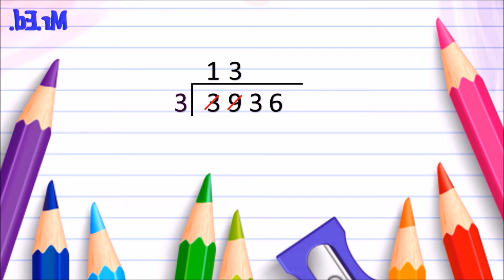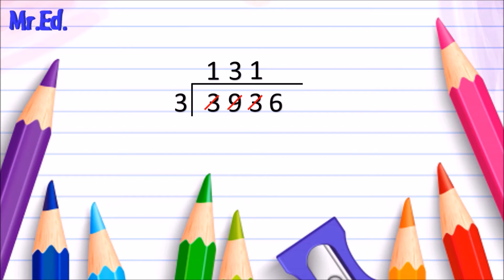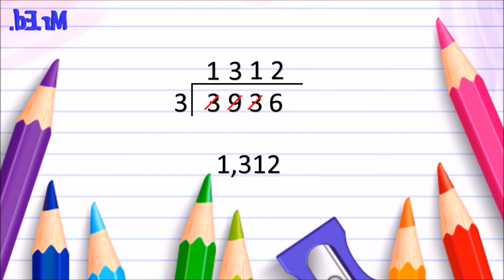Then we move along again. How many times does 3 go into 3? Well, 3 goes into 3 only once. So we write our 1 in the quotient area and we cross out our 3. And finally, how many times does 3 go into 6? Using our times tables: 3, 6 — we know it's twice. So we write a 2 in the quotient area. The answer to 3,936 divided by 3 is 1,312.